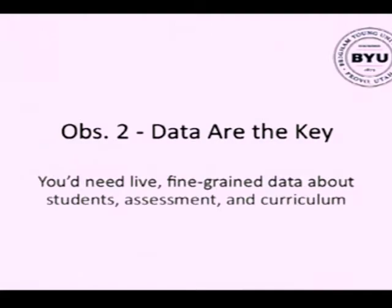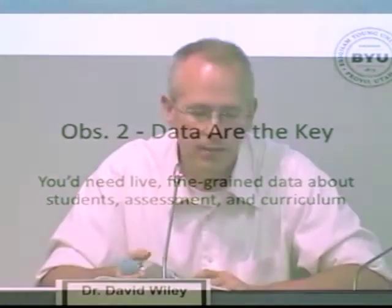The kind of data that you normally get in a class, we jokingly refer to as autopsy data. We call it autopsy data because the class is over, the student's gone, there's nothing you can do for them — but now we have some data about how their learning went. But to do this kind of strategic tutoring, you need live data. You need data from one second ago — how's the student doing, what are they doing? And of course the third observation is that data are expensive, but good data are really, really expensive. And who on earth can afford to gather and analyze data like this?